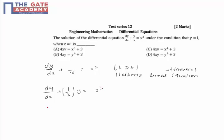The Leibniz linear equation is dy/dx plus p times y equals q, where q is the function of x and p is the function of x.